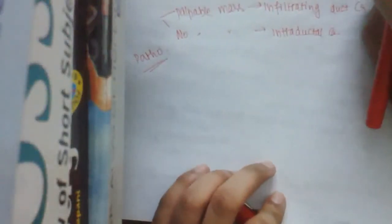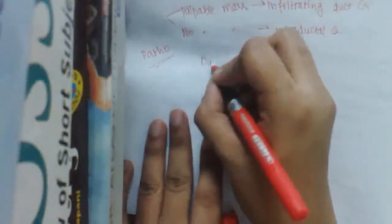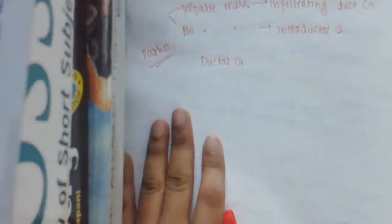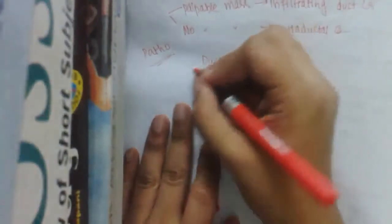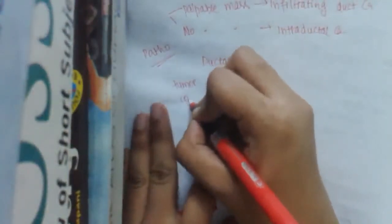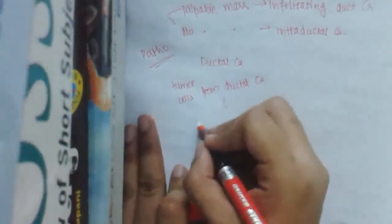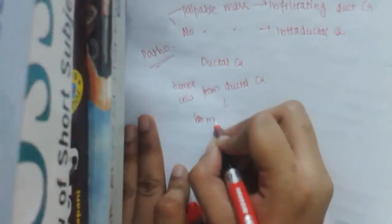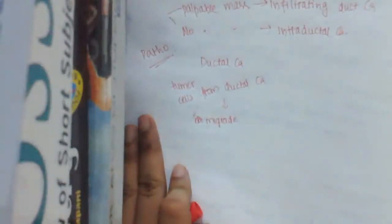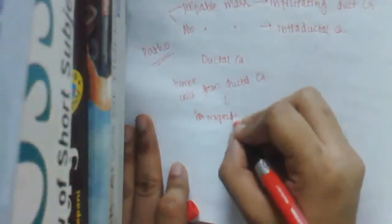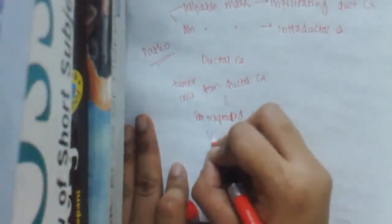Coming to pathogenesis, the major tumor cells are from underlying ductal carcinoma. It is necessary that a ductal carcinoma should be present for Paget's disease to occur. The tumor cells from the ductal carcinoma migrate into the lactiferous duct.